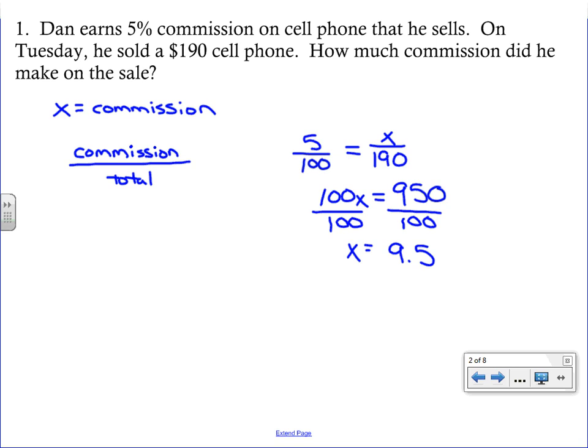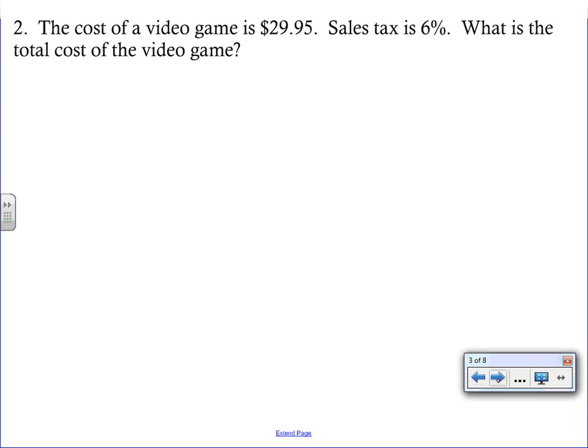Dividing both sides by 100 gives x equals 9.5. That's not a complete final answer, because commission is money — so the actual answer is nine dollars and fifty cents. Make sure you're actually answering the question.